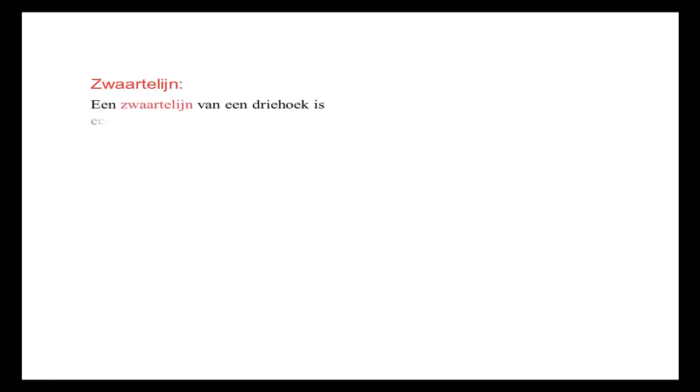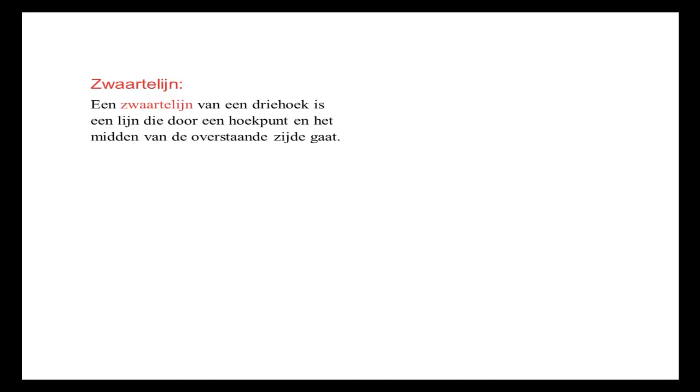We gaan het hebben over zwaartelijnen in driehoeken. Een zwaartelijn van een driehoek is een lijn die door een hoekpunt gaat en door het midden van de overstaande zijde.